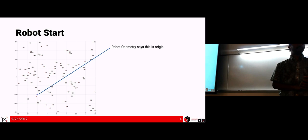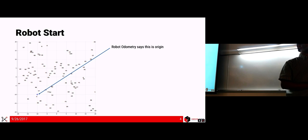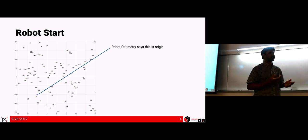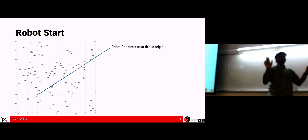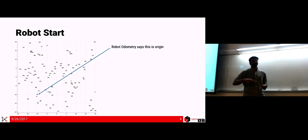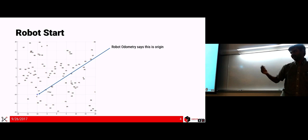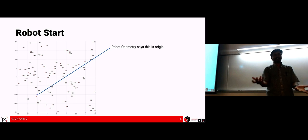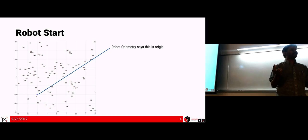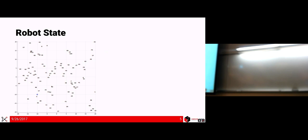In a real-world scenario you don't know where the robot started, so you just assume arbitrarily that it's zero-zero. If you have a humanoid and you turn it on, it doesn't know where it is in the room — it just assumes this is the origin and maps from there. That's a rigid transformation with respect to the actual world frame, so it doesn't matter that much. Now we define something called the robot state.